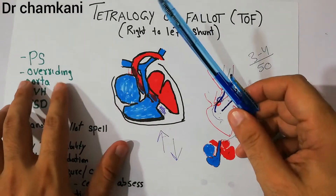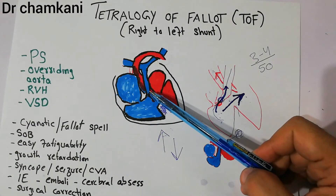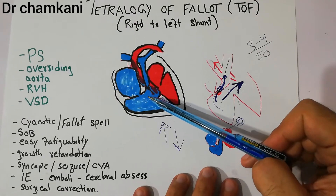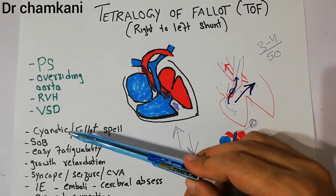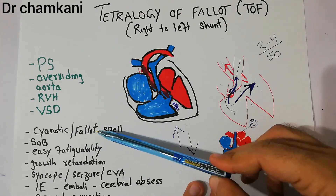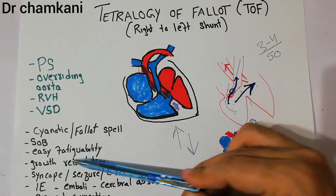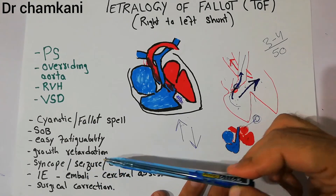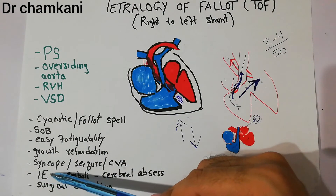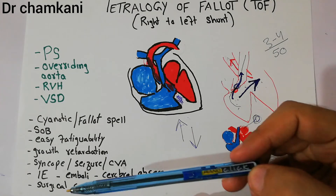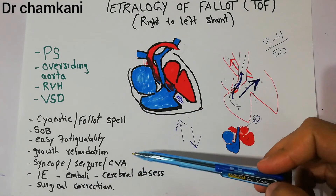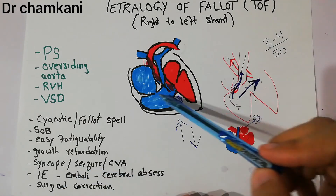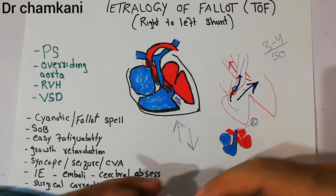To summarize: Tetralogy of Fallot is a combination of pulmonary stenosis, VSD, overriding aorta, and right ventricular hypertrophy. Patients have symptoms like cyanosis, cyanotic or Fallot spells, shortness of breath, easy fatigability, growth retardation, syncopes, seizures, and cerebrovascular accidents. Complications include infective endocarditis, emboli in the brain or other body parts, and cerebral abscess. The treatment is surgical correction.